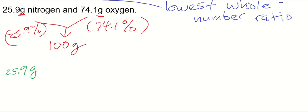So we have 25.9 grams nitrogen and 74.1 grams oxygen.